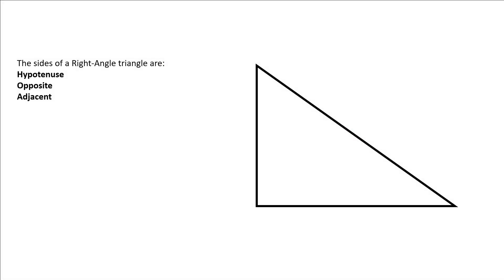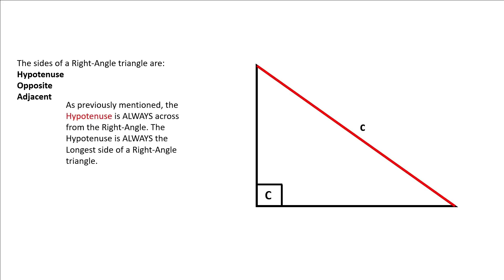Now we need to know what the sides of the triangle are called. We've referenced the opposite side several times. One of the sides of a triangle is called the opposite side, and it is the side that is opposite to the reference angle. The adjacent side of a triangle is the side that is next to the angle. And as previously mentioned in our last video, the hypotenuse is always the longest side and always directly across from the right angle.